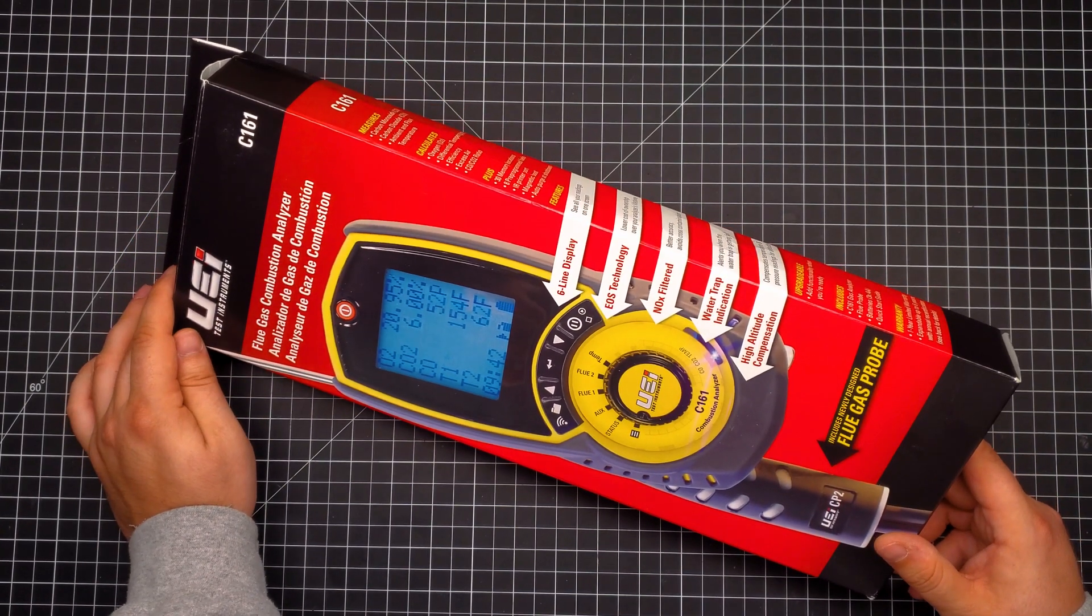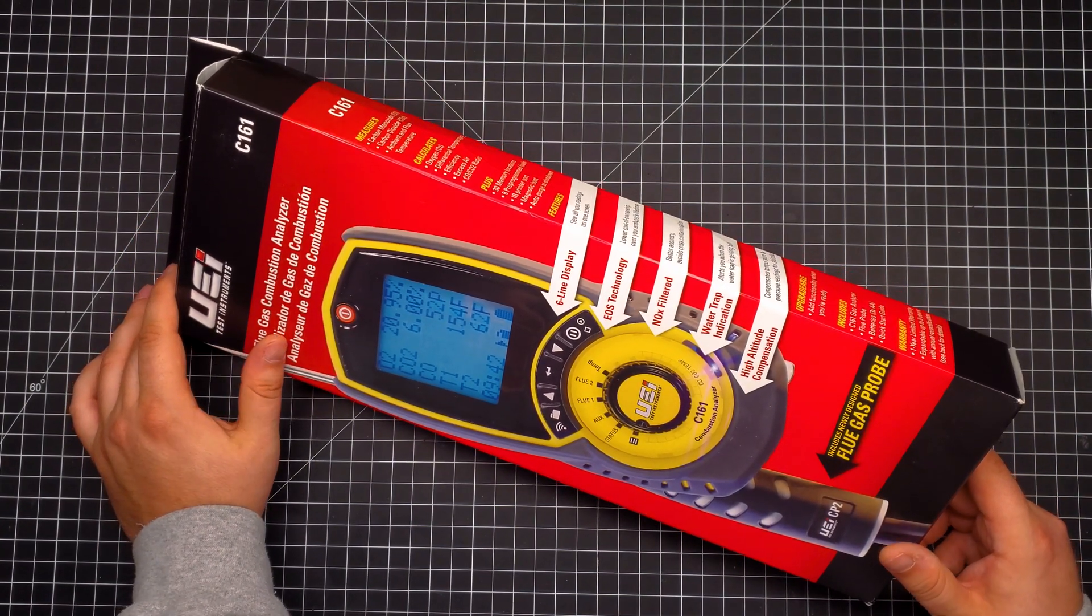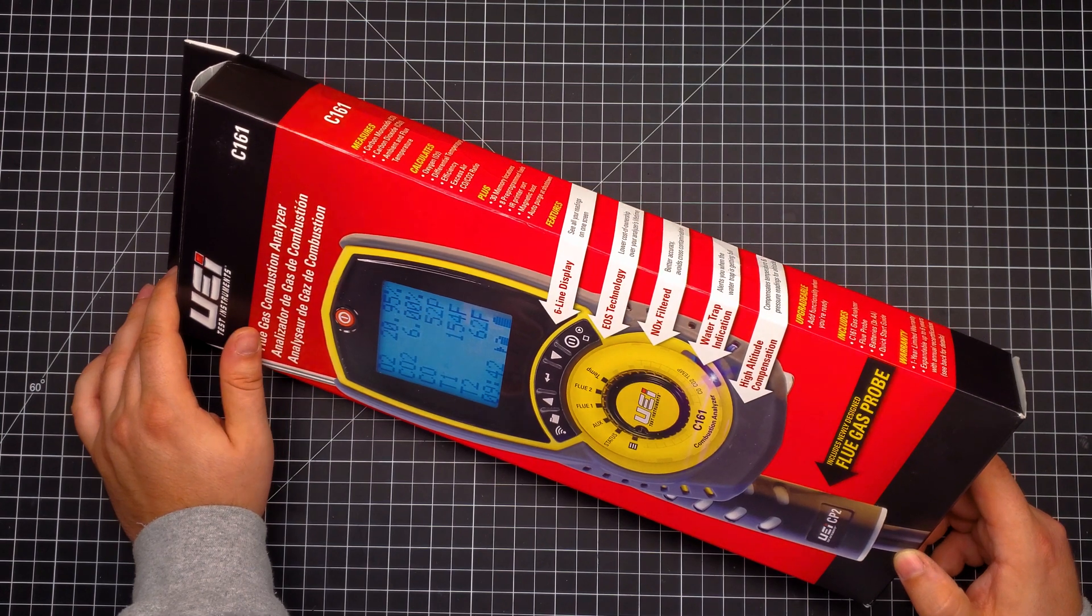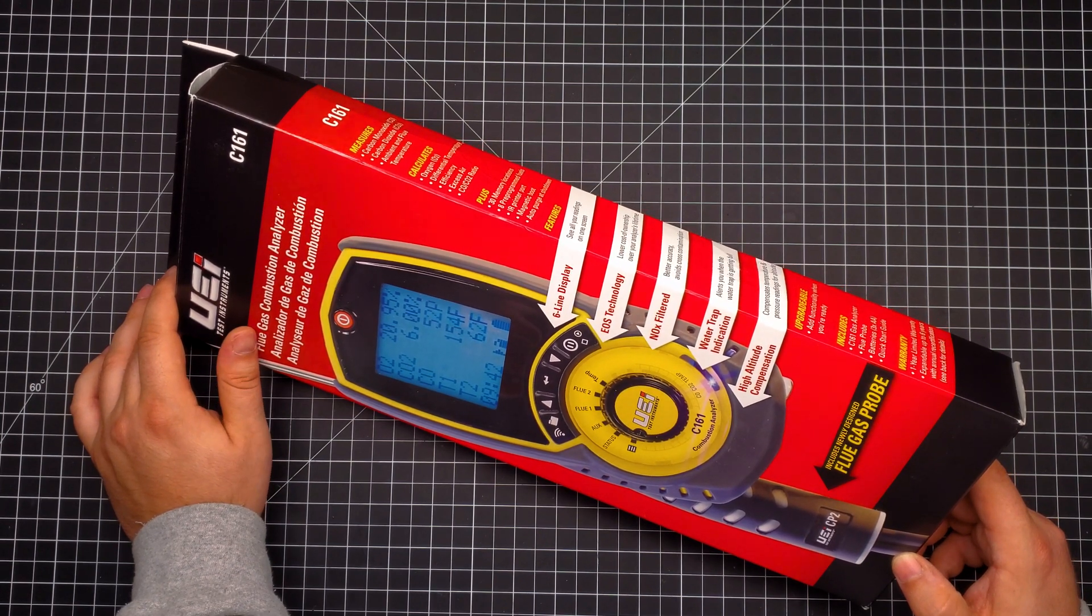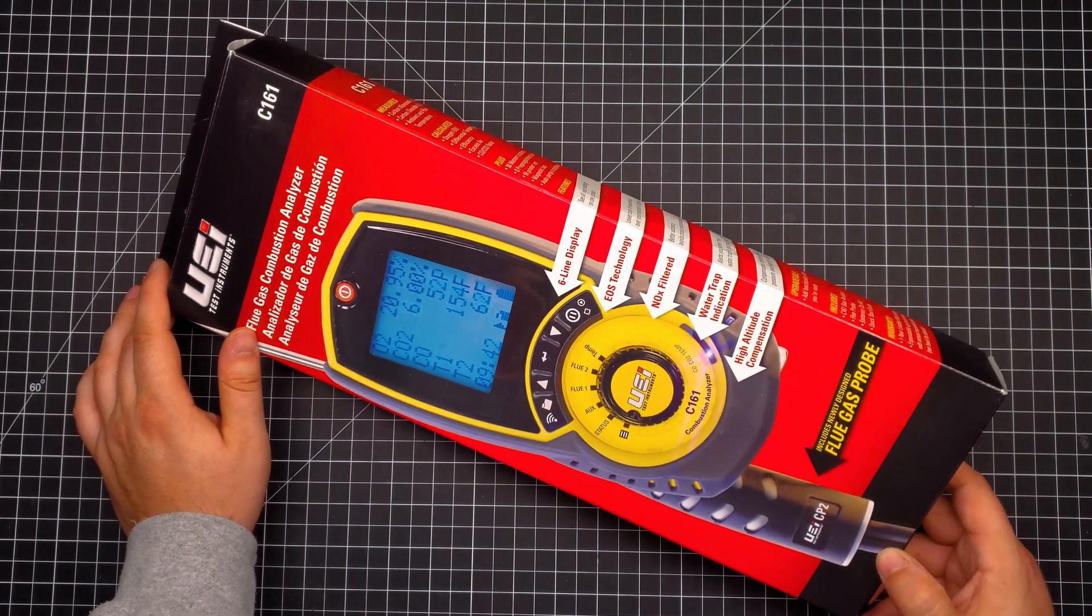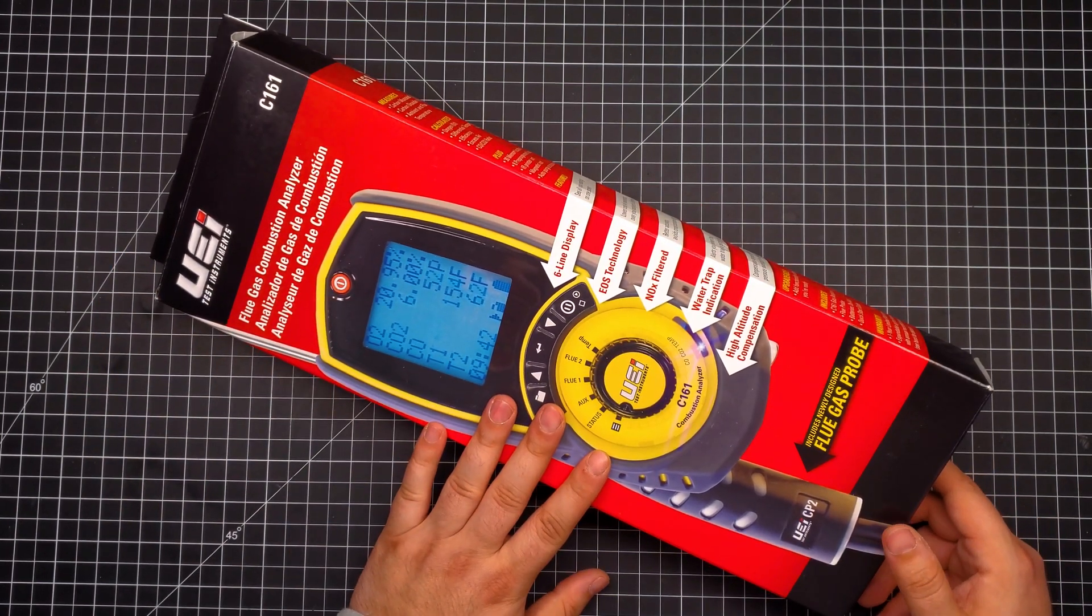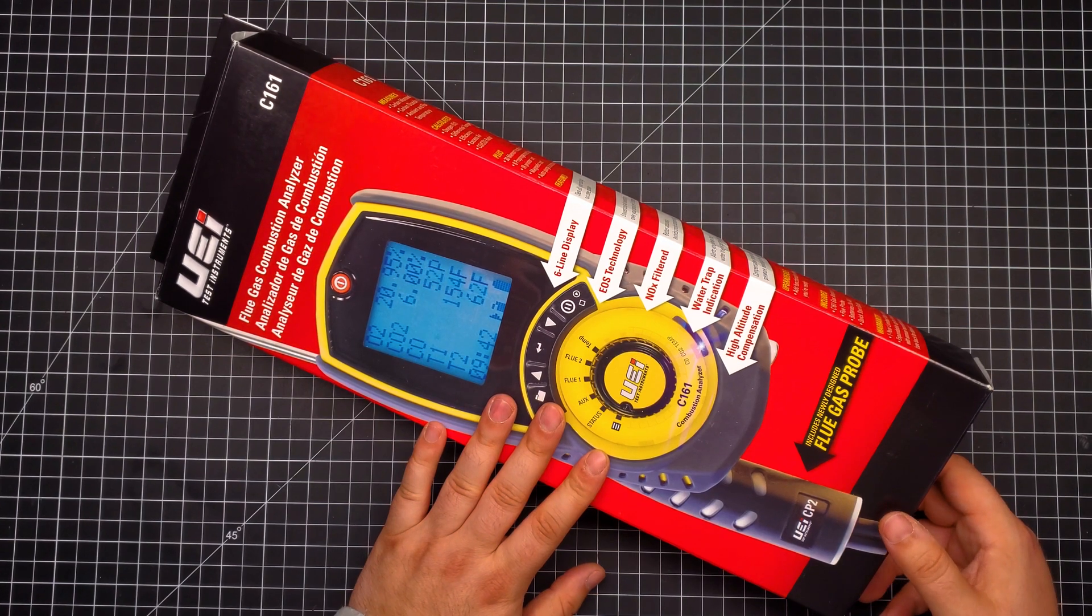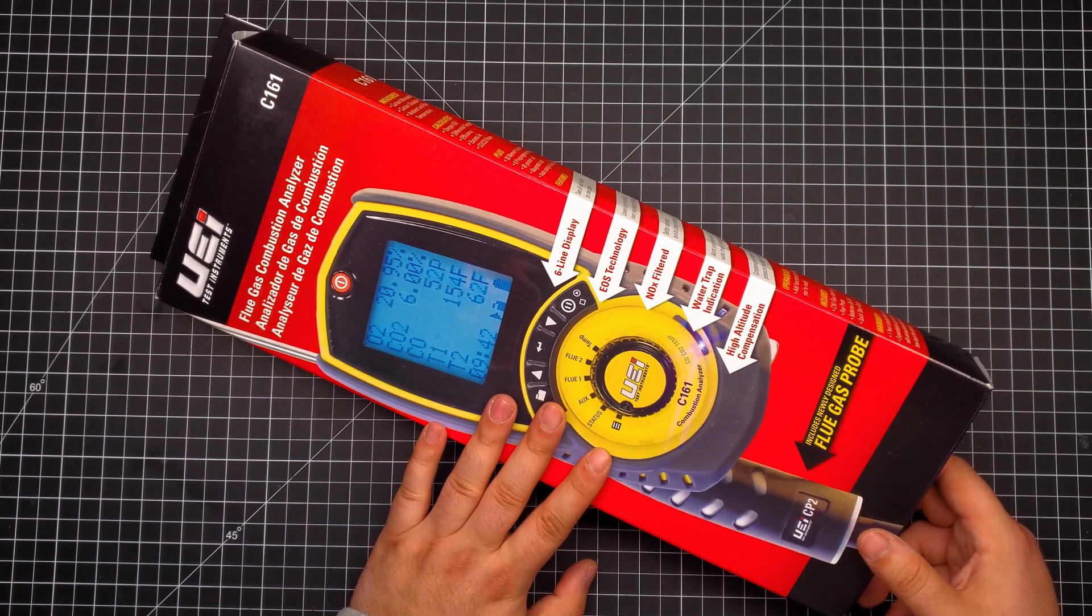Some combustion analyzers do offer long life sensors, but don't be confused with the long life O2 sensors being similar to the NDIR CO2 sensor like used in this series. It's still an electrochemical sensor but it does last significantly longer.